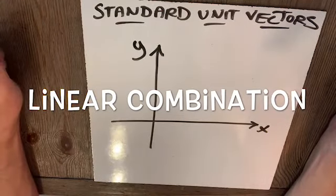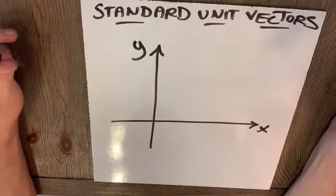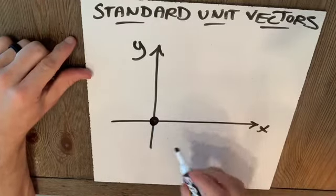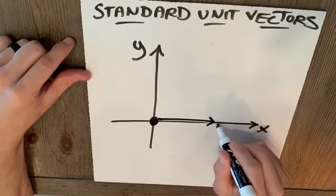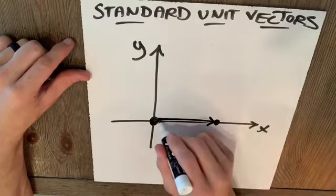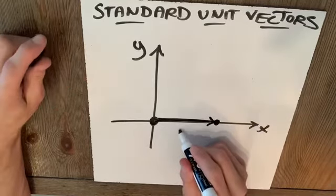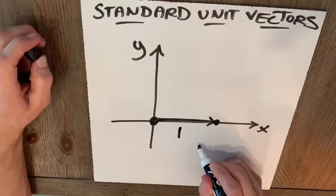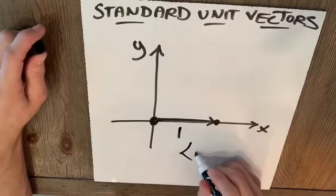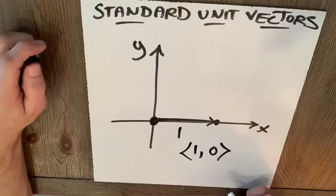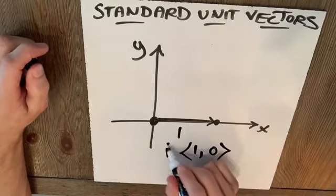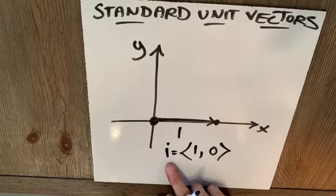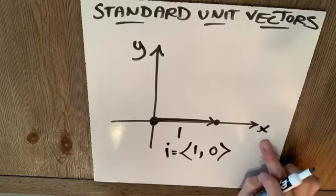Let's talk about standard unit vectors. When you hear standard, think about standard form. A standard unit vector in the direction of the x-axis has magnitude 1 going in this direction. In component form, this is to the right 1, up and down 0, and we call that vector i. If I talk about i, I'm talking about a standard unit vector in the direction of the positive x-axis.